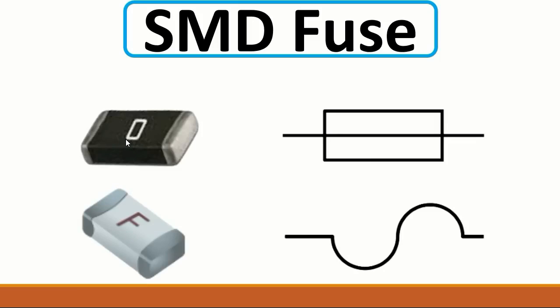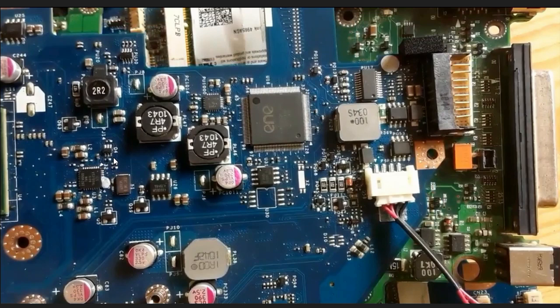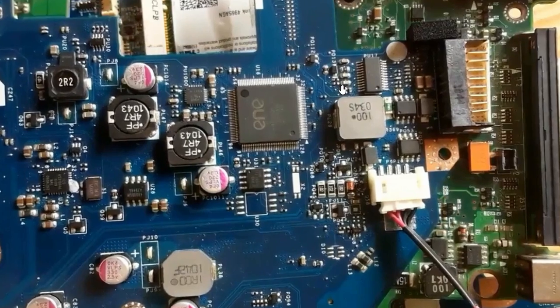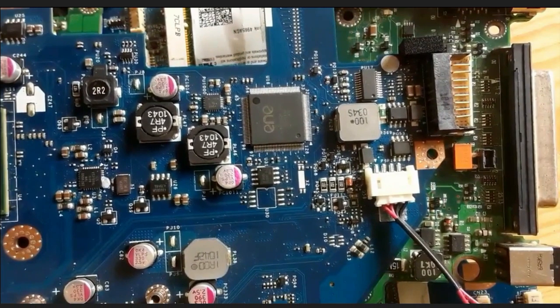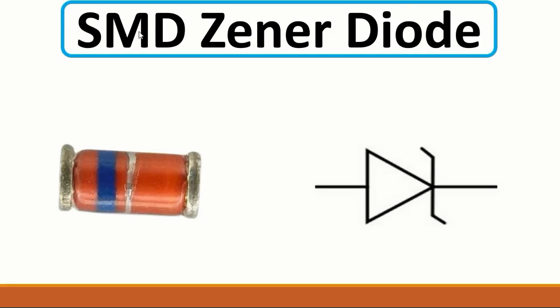Zero also means fuse but we call this a fuse resistor. Let's see the motherboard if we can find any fuse resistor. Basically we don't have any fuse here, but as you can see this is a fuse resistor. Anyway, this is the fuse resistor.